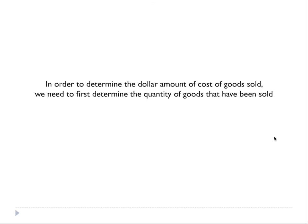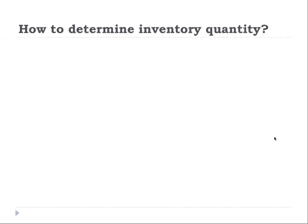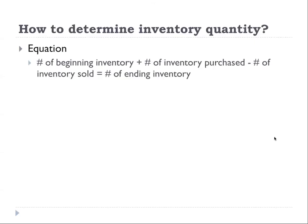In order to determine the dollar amount to record for cost of goods sold, we need to first determine the quantity of goods that has been sold. Then we determine what cost is associated with each quantity that was sold, and then we can get the total cost of goods sold. The equation here is: beginning inventory plus the number of inventory purchased minus the number of inventory sold equals ending inventory. For example, if you have two units at the beginning, you purchased three, and you sold one, you have four left.